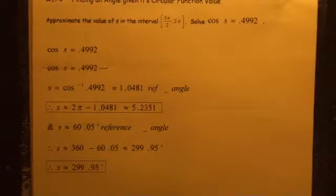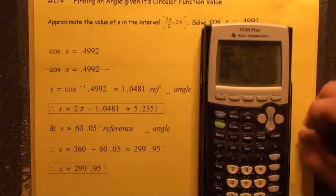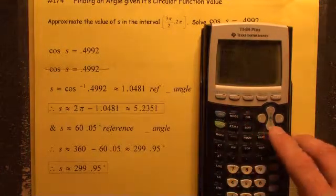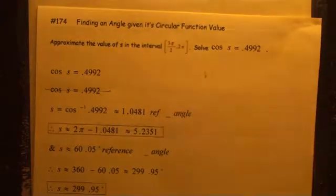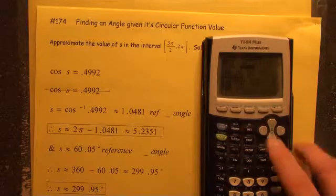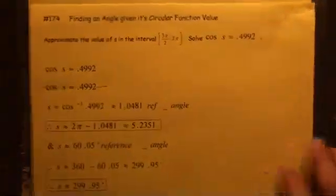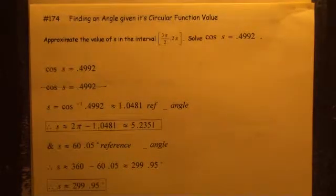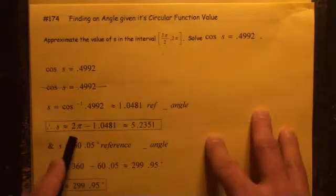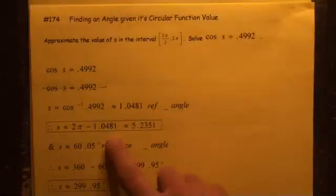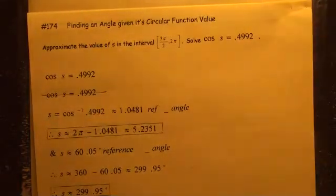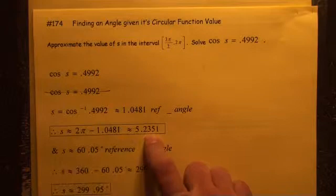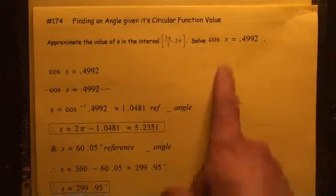You need to make sure your calculator is in radian mode. For the TI-83s and 84s, press MODE and go down and make sure radian is highlighted. We work with radians because the interval has π's in it. If the interval had degrees in it, we would have our calculator in degree mode. So 1.0481 is the reference angle, and since we're in Quadrant 4, we subtract from 2π: 2π minus 1.0481 gives us 5.2351. That is the angle that S equals.